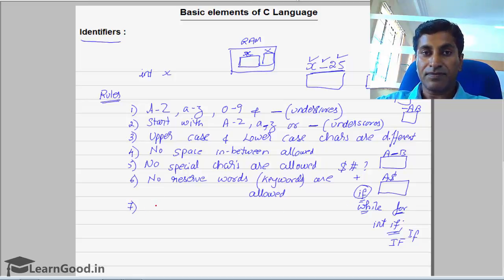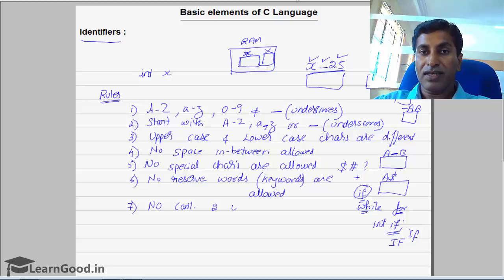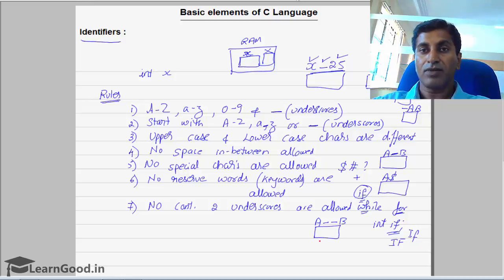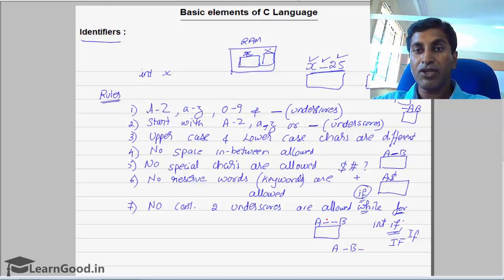The seventh rule: no two continuous underscores are allowed. So you cannot give a memory location name like __b — that is not possible. If you want, you can give a name like a_b_ — that is possible. But two consecutive underscores are not allowed.